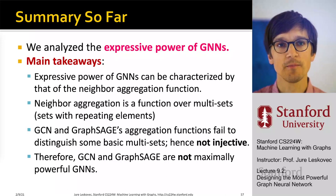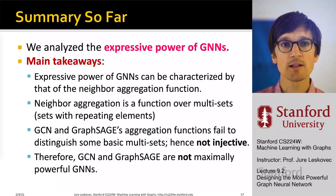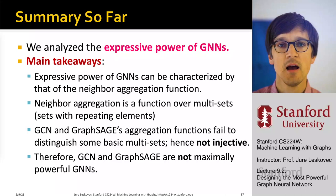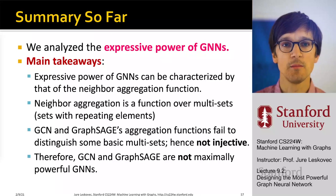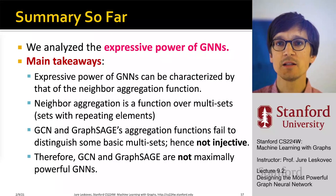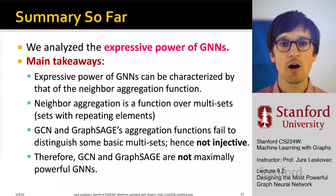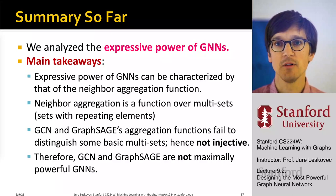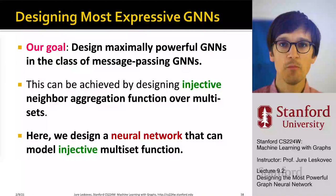To summarize: the expressive power of a GNN is characterized by its neighborhood aggregation function, which operates over multi-sets. GCN and GraphSAGE's aggregation functions — mean and maximum pooling — fail to distinguish some basic multisets, meaning they are not injective: different inputs get mapped to the same output and information is lost. Therefore, GCN and GraphSAGE are not maximally powerful graph neural networks.